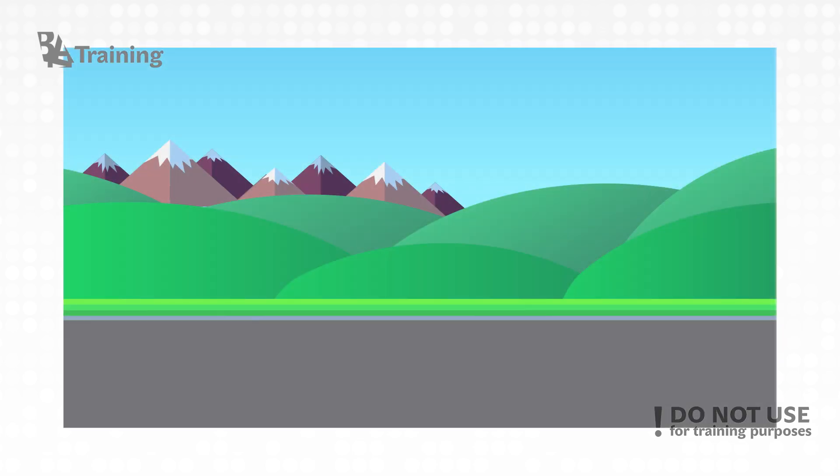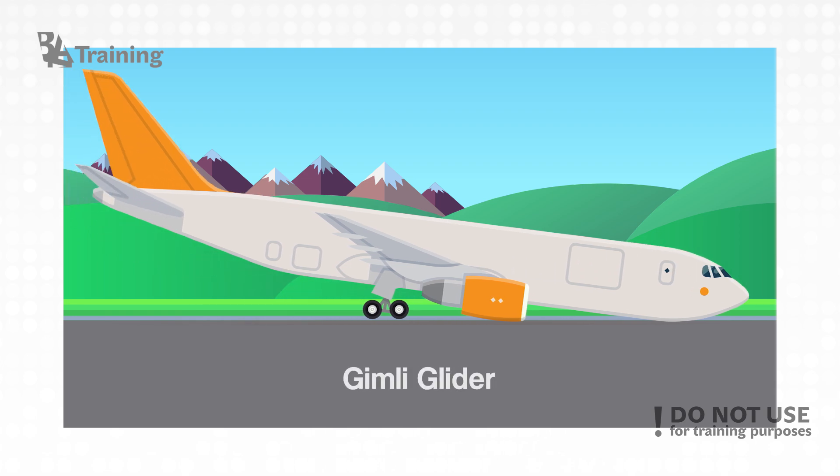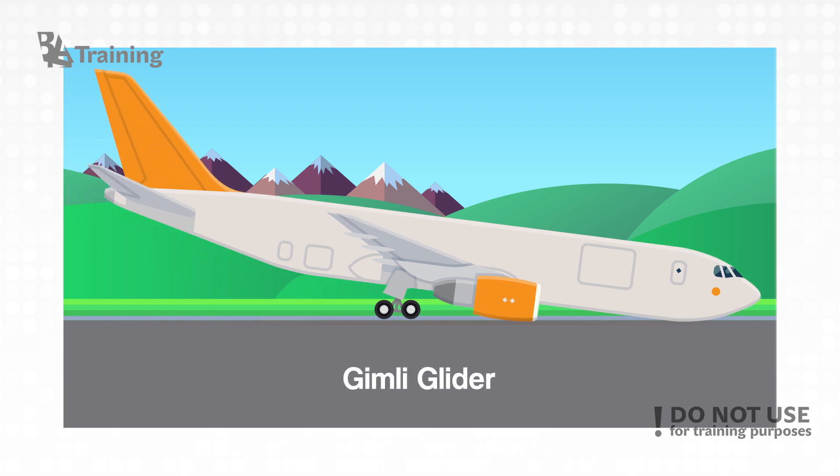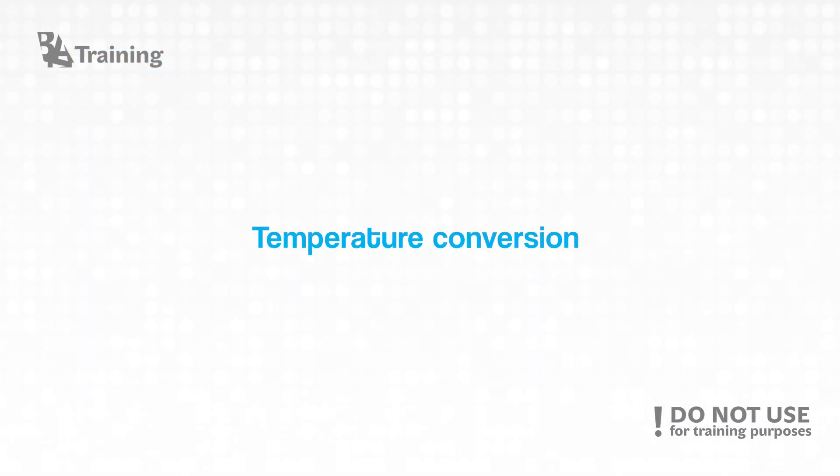One of the most famous incidents called Gimli Glider involving a Boeing 767 happened due to wrong conversions of the units. Gladly there were only a few non-fatal injuries but it opened up the importance of the ability to easily convert measuring units.